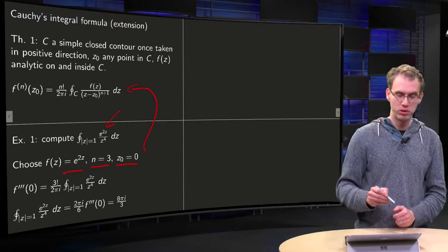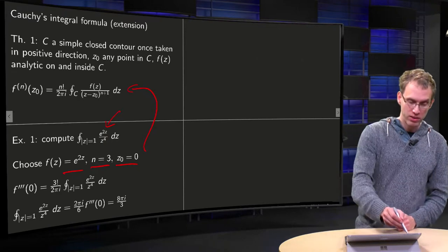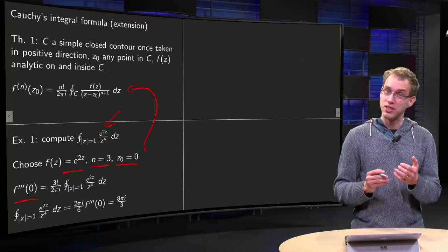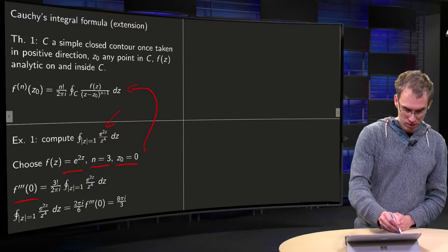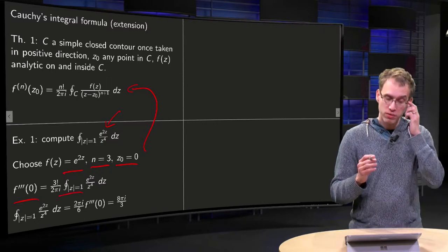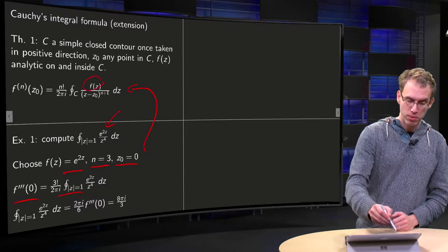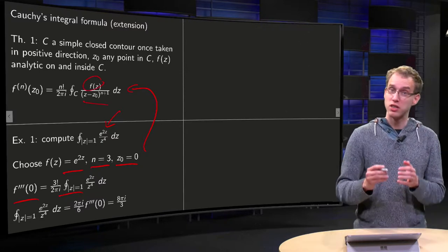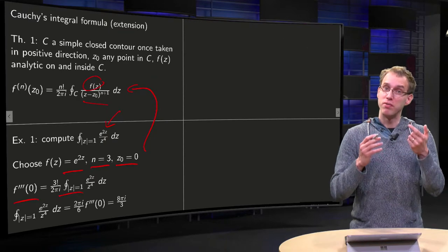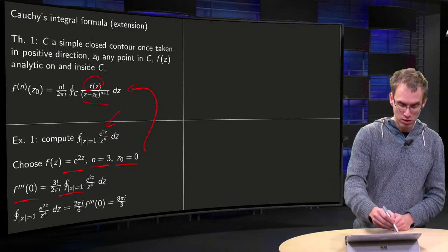plug them in into Cauchy's integral formula, then you get the third derivative at 0 equals integral |z|=1, and then we have f(z) equals e to the power 2z, and z0 equals 0, so we divide by z to the power 3 plus 1, by z to the power 4,